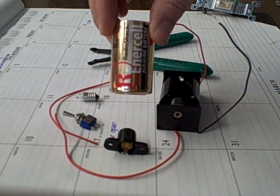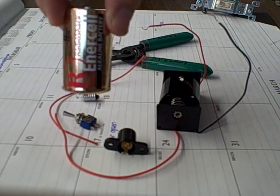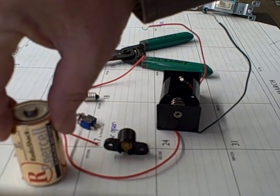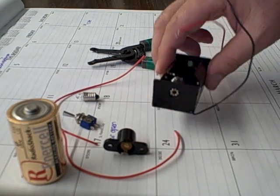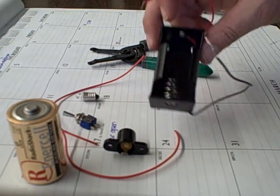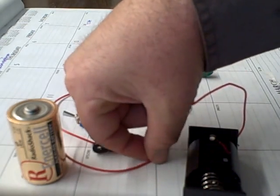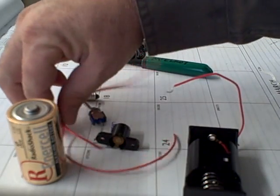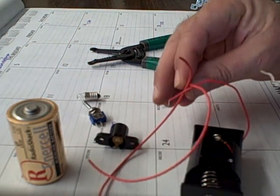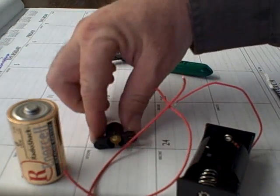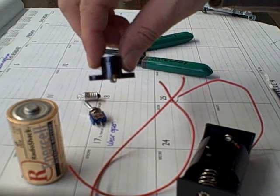First of all, I have a battery or a power source. This is a Radio Shack D battery. Then I have a holder that I bought at Radio Shack to put the D battery in. I have two pieces of electrical wire, they're red. It doesn't matter what color they are. Then I have a socket for my light bulb.